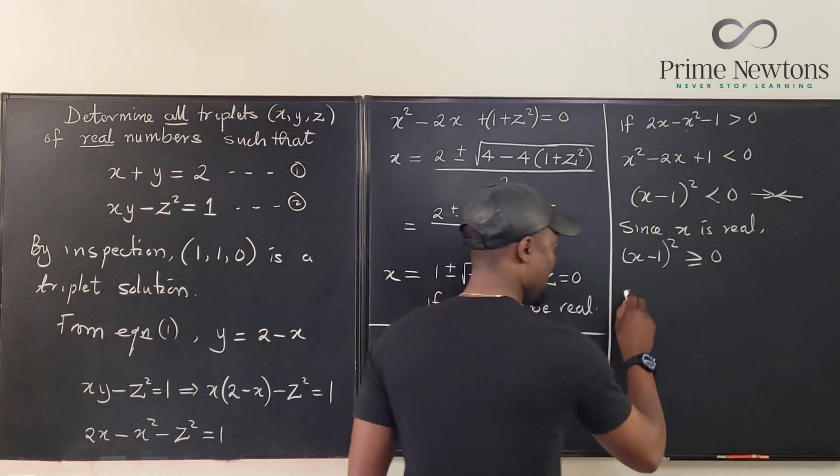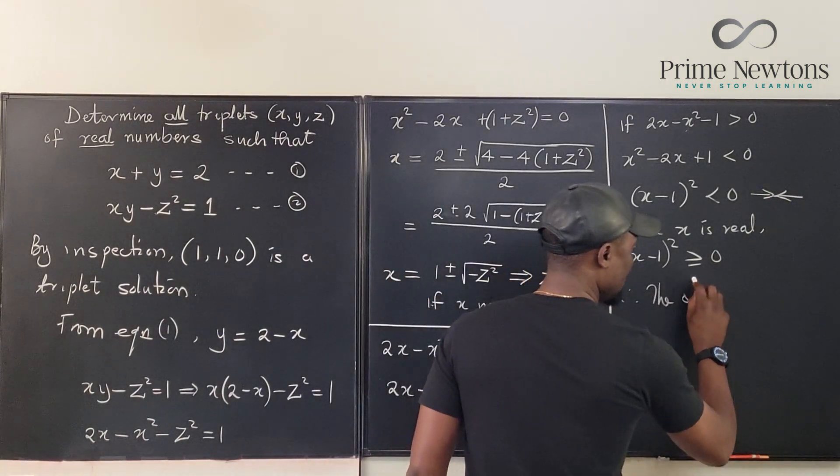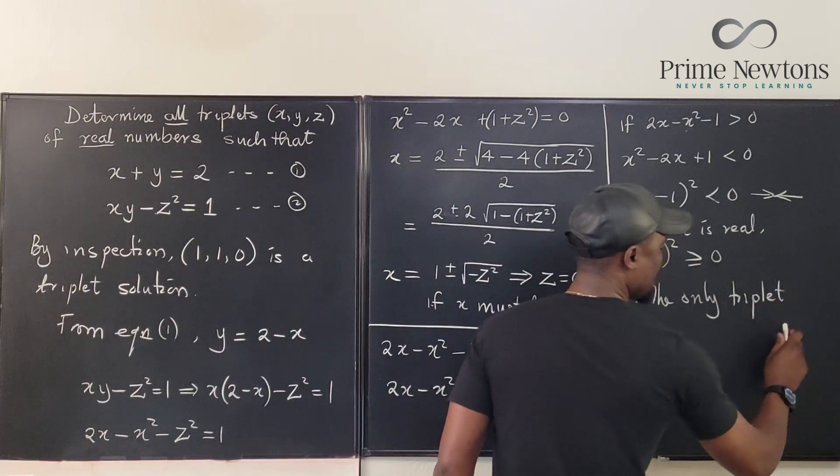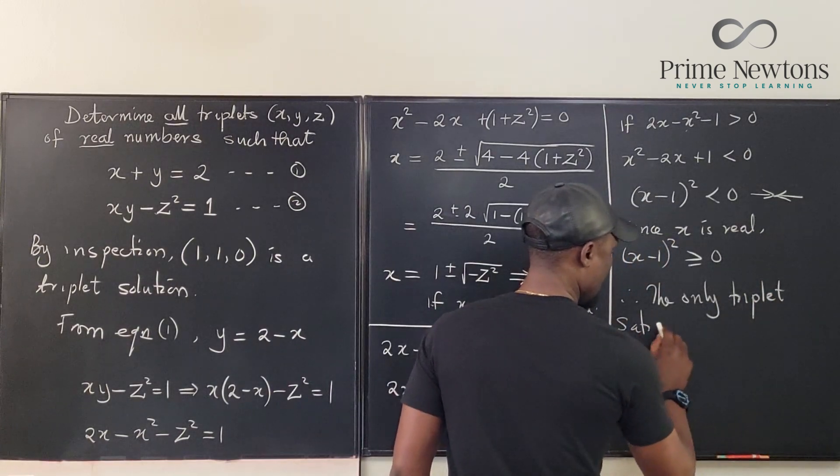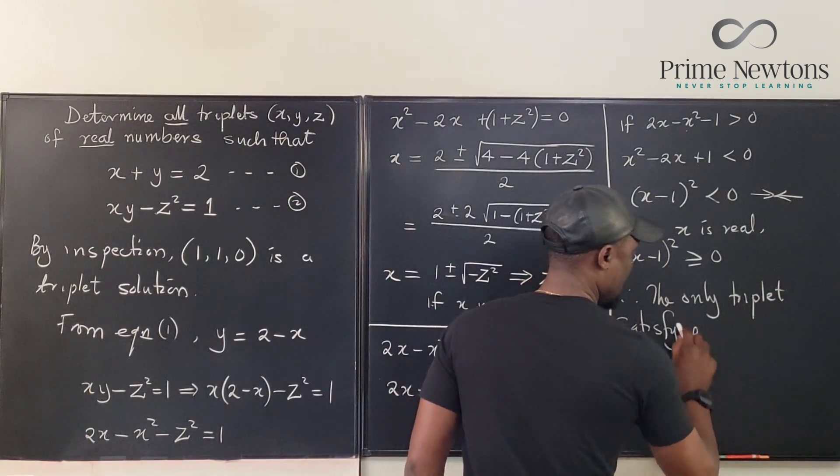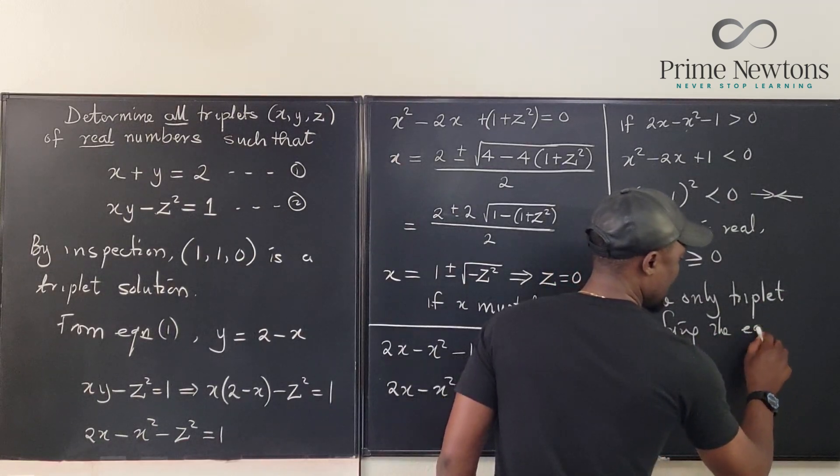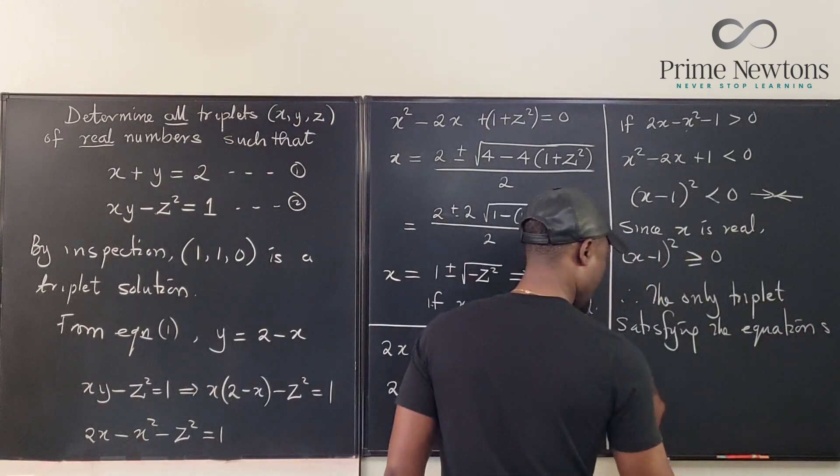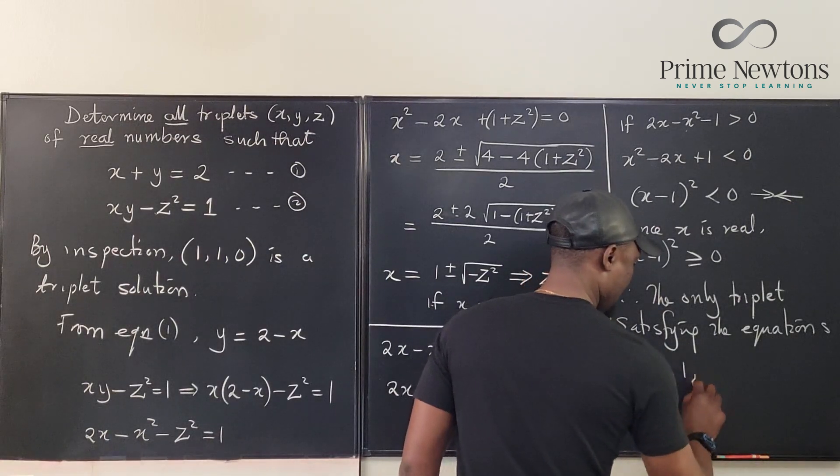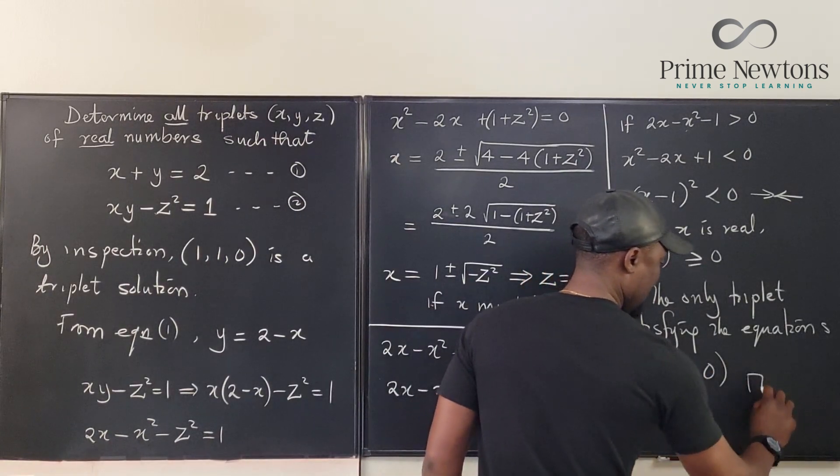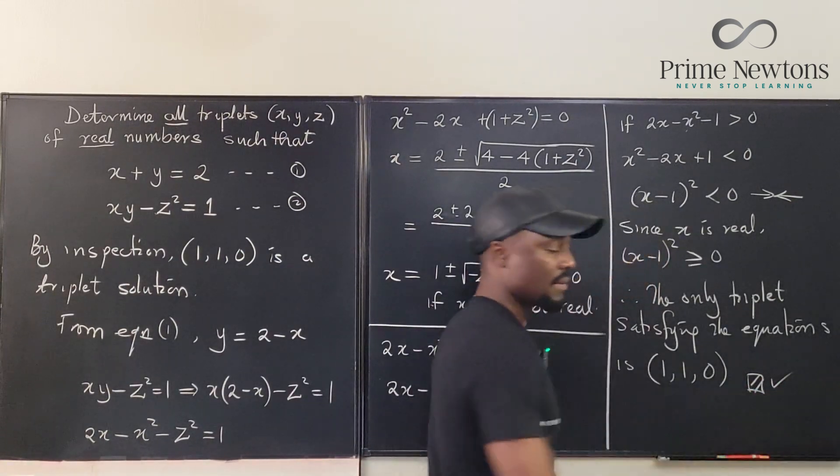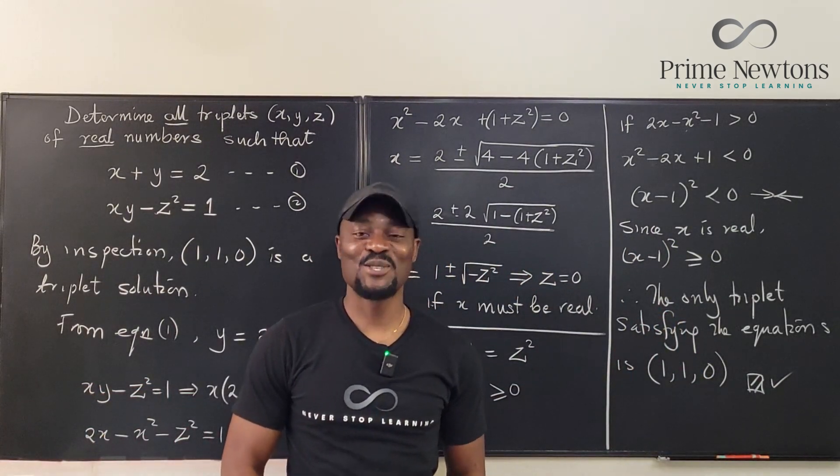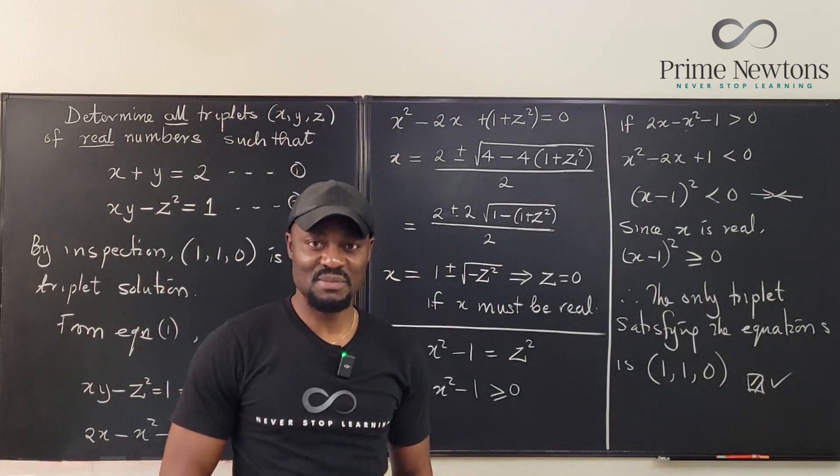Therefore, the only triplet is (1, 1, 0). Checkmark and done. Never stop learning. When you stop learning, you stop living. Bye-bye.